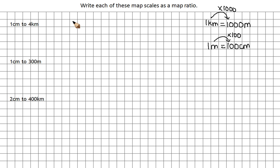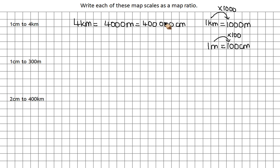So now I can change 4 km into cm. km to m is times by 1000, so that's 4000 m. Then m to cm is times by 100, so that's 400,000 cm. Now they're both using the same measurement, I can just write that as 1 to 400,000. So 1 cm on the map is 400,000 cm in real life.